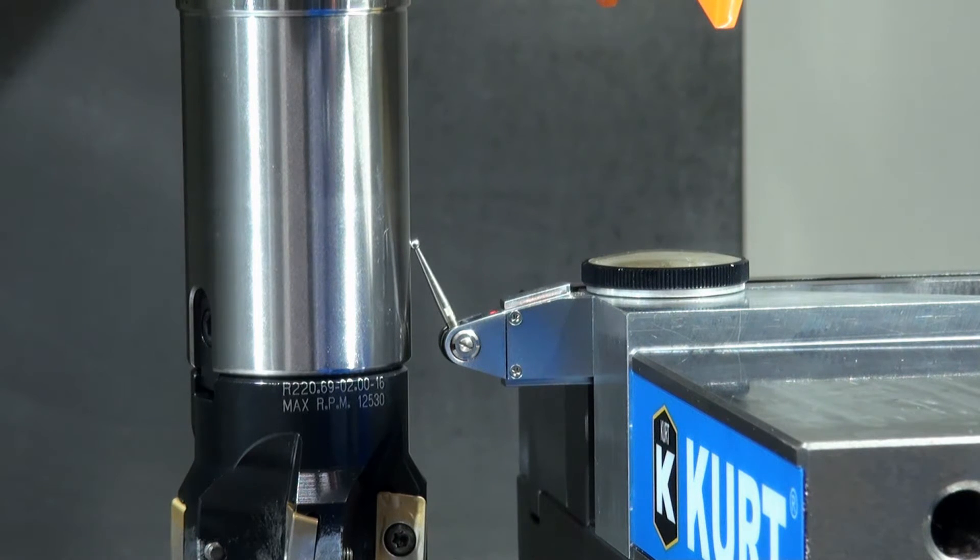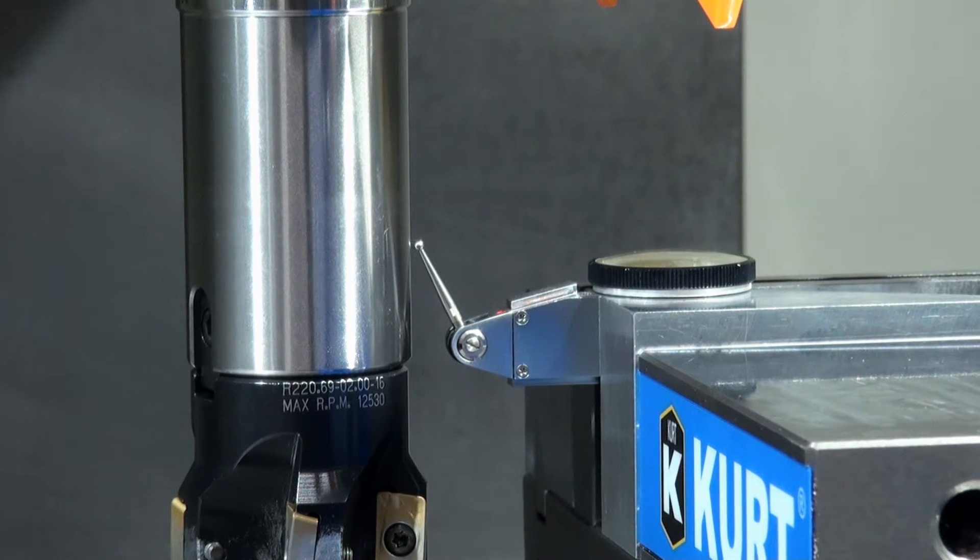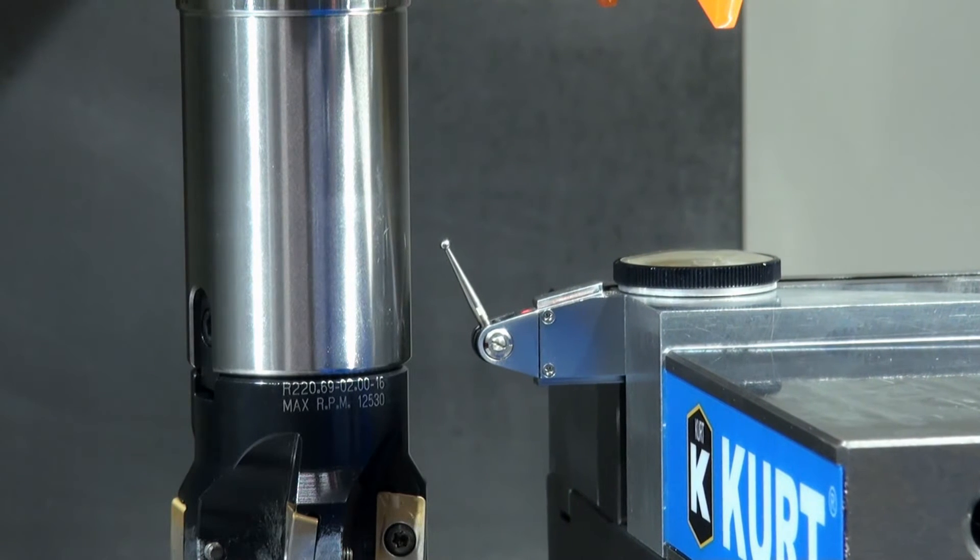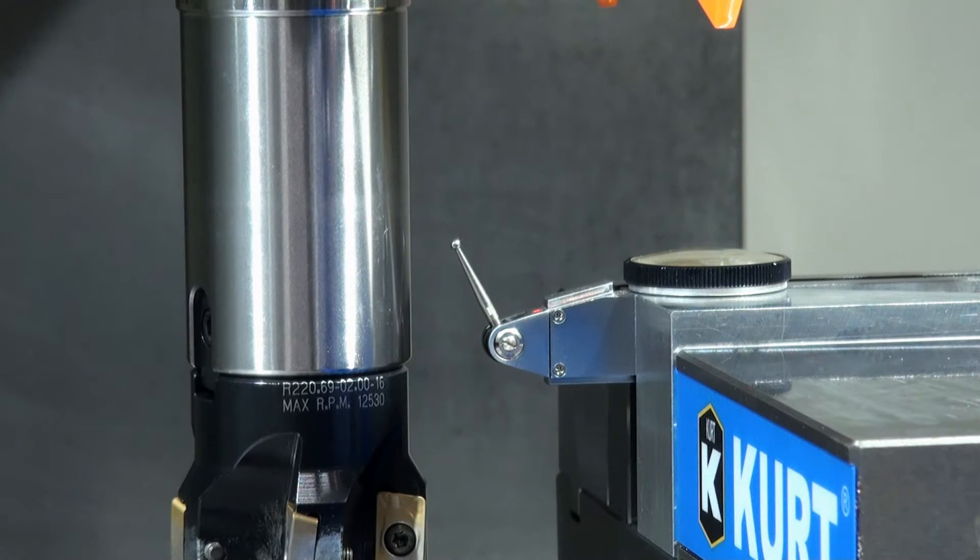So the next step I'm going to do is I'm not going to move y at all anymore. I'm only going to move x and z. So first I'm going to just back off my indicator. So we backed off the indicator. Now I'm going to raise z up.